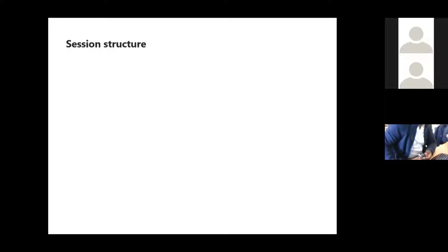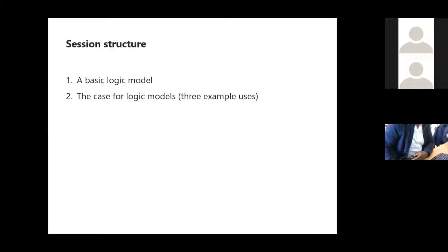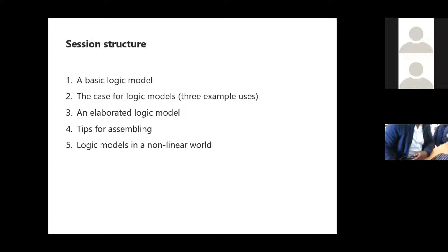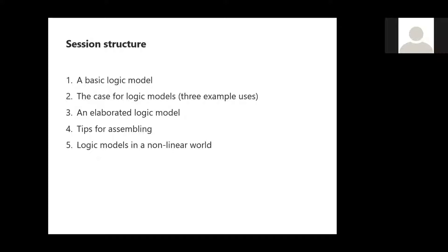The session is in five parts. First, I'll talk you through a basic logic model. Second, I'll outline the case for the use of logic models through three example uses. Third, I'll elaborate the basic logic model and talk in more detail about the different components, walking through a template we often use. Fourth, I'll move into practicalities for assembling logic models and share tips I've picked up over the years. And fifth — probably the more advanced bit — we'll talk about what complexity thinking or systems thinking might mean for logic models.